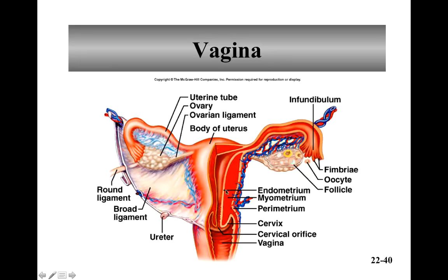The vagina is nine to twelve centimeters long. It's a muscular tube that receives the penis and sperm and allows the baby to pass through. It has an inner mucosal layer — though there are actually no mucus glands in there; all the mucus comes from the cervix and from the vaginal orifice. The middle muscular layer has longitudinal and circular fibers with some striated fibers near the vaginal orifice. The outer fibrous layer connects the vagina to the surrounding organs and helps hold it in place.